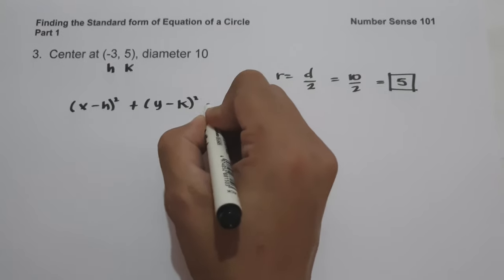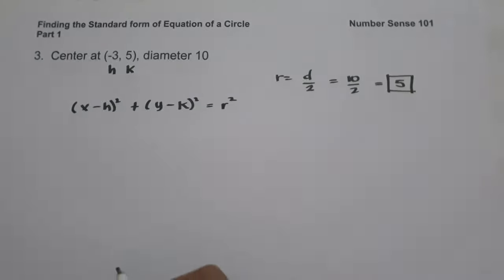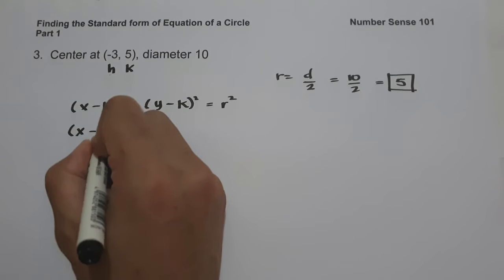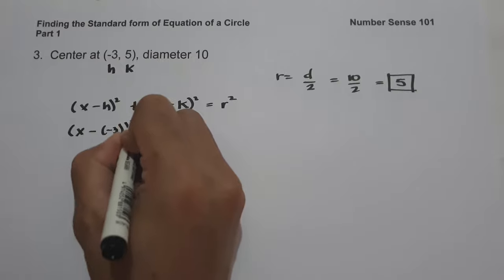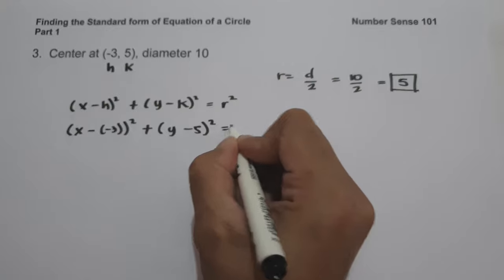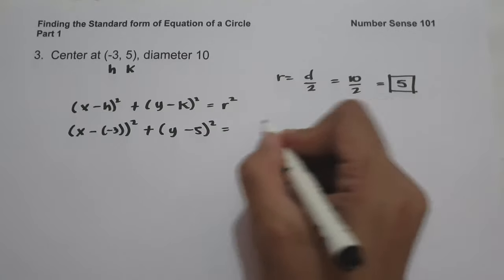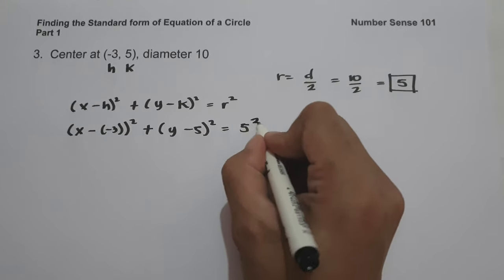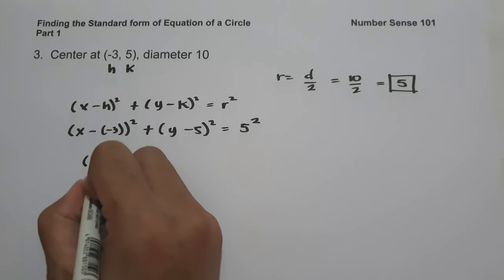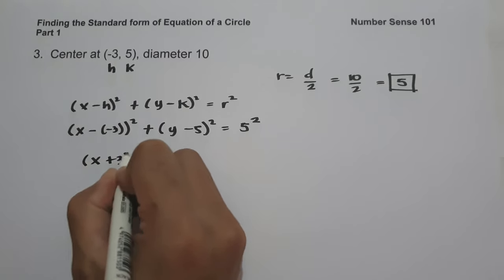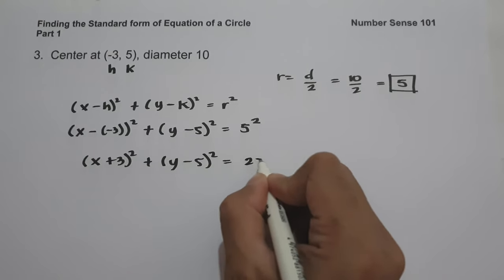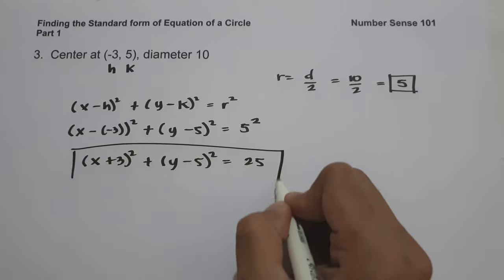Substituting into the standard form: (x minus negative 3) squared plus (y minus 5) squared equals 5 squared. Simplifying, this becomes (x plus 3) squared plus (y minus 5) squared equals 25, and this will be our answer.